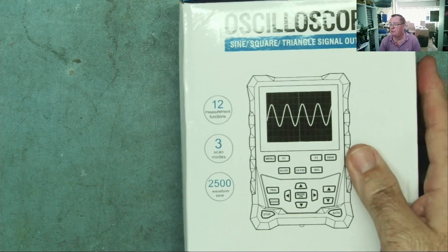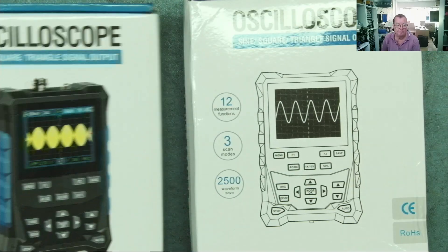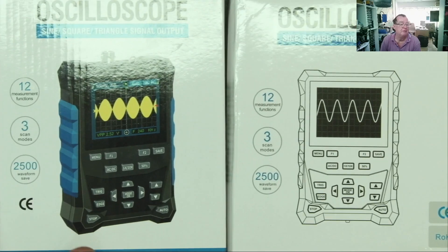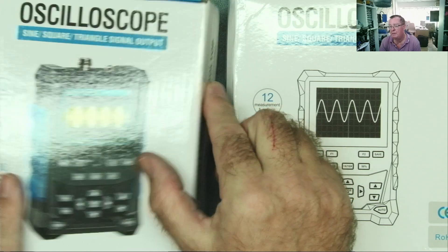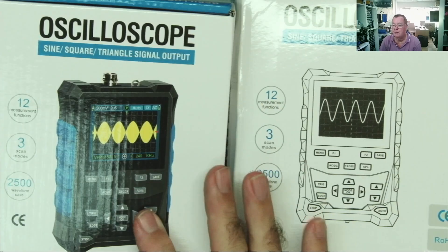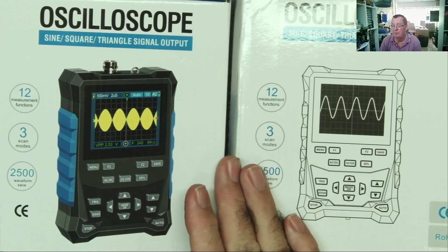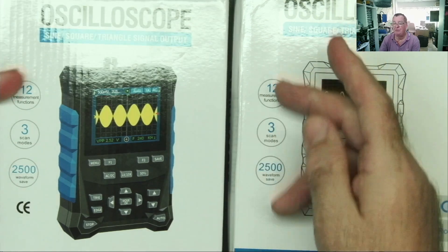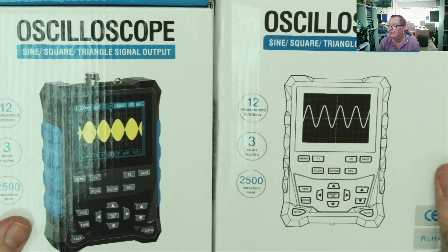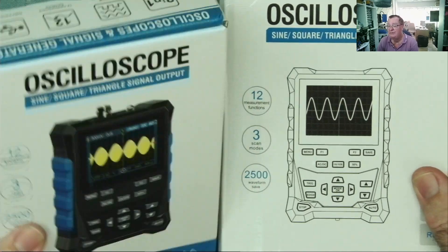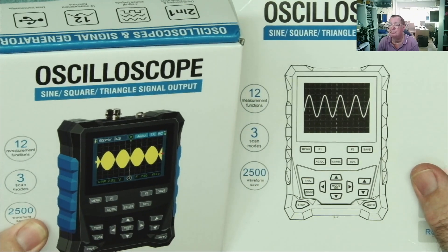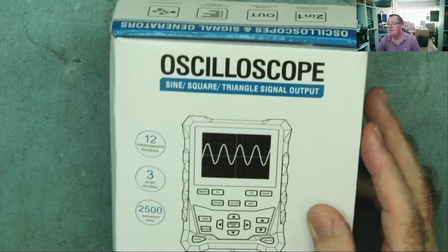The oscilloscope is rated as 120 megahertz, and this may look very familiar to you because not so long ago I reviewed this, the ET120M Pro. That's also a 120 megahertz oscilloscope with a built-in function generator and it looks very similar in specification.